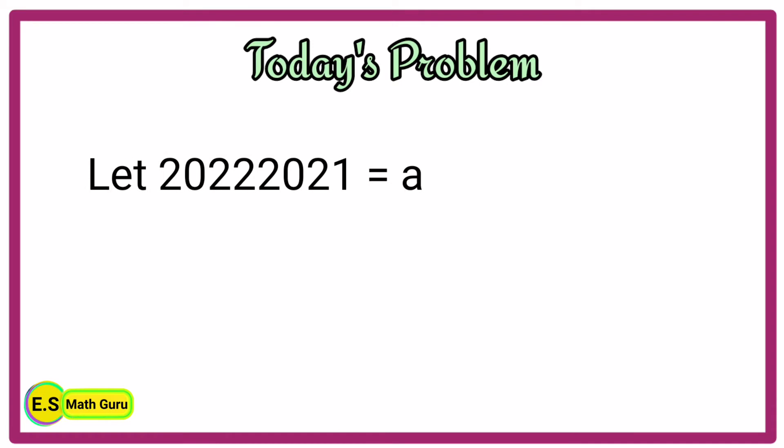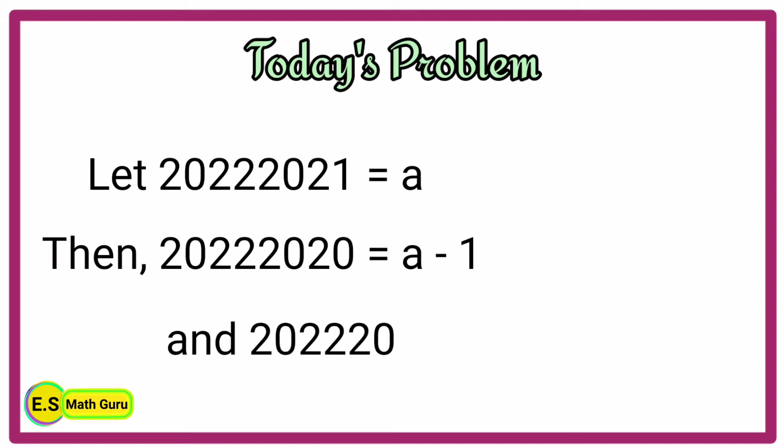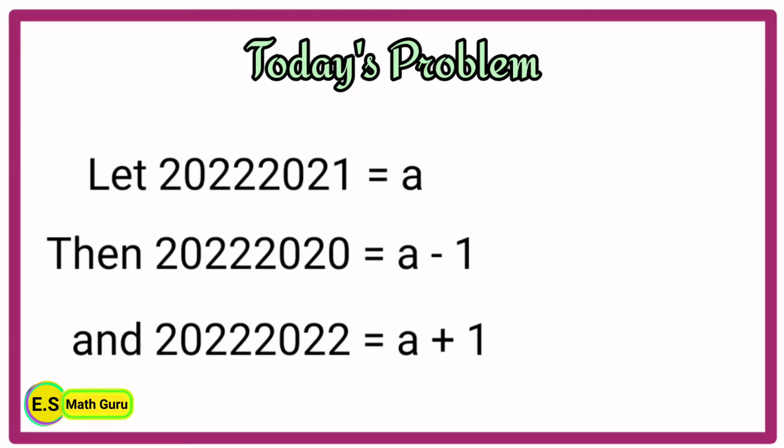First, let us consider 20222021 equals a. Then, 20222020 equals a minus 1, and 20222022 equals a plus 1.